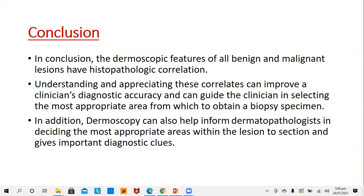To conclude, the dermoscopic features of all benign and malignant lesions have their histopathological correlations. Understanding and appreciating those correlates can improve clinicians' diagnostic accuracy and can guide the clinician in selecting the most appropriate area for obtaining a biopsy specimen. In addition, dermoscopy can also help inform the dermatopathologist in deciding the most appropriate area within the lesion for sectioning and give important diagnostic clues. Thank you all for your patient listening.